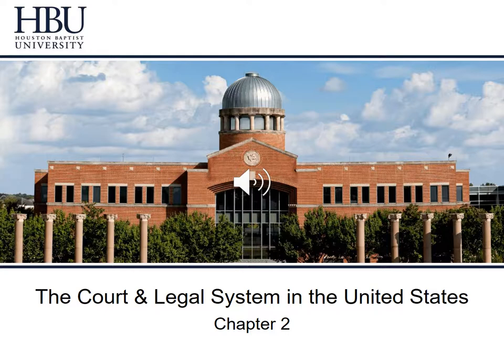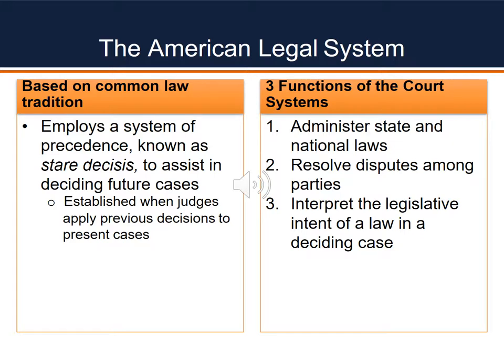Lastly, we'll be looking at legal citations specifically, and we'll be spending some time on how to make sense of that so that you can do legal research but also understand what that means. Let's start off by talking in general terms about the American legal system. This system is based on common law tradition. It is where judges establish previous decisions to present cases. It's known as this concept called stare decisis, and that means literally to assist in deciding future cases. We'll spend a bit more on that concept in a few of the coming slides.